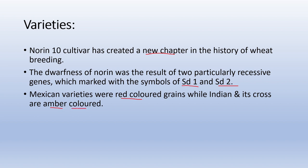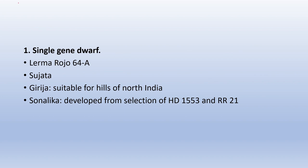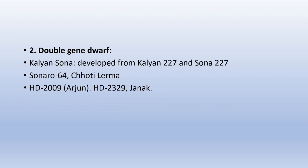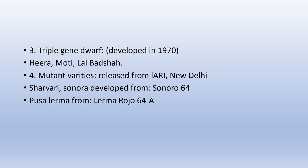First category: single gene dwarf varieties — examples are Lerma Rojo 64A, Sujata, Girija (suitable for hills of North India), and Sonalika (developed from selection of HD1553 and RR21). Second: double gene dwarf varieties — Kalyansona, Sonora 64, Chhoti Lerma, HD2009, HD2329, and Janak. Third: triple gene dwarf varieties, developed in 1970 — Heera, Moti, and Lalbatsha. Fourth: mutant varieties released from IARI New Delhi — Sharbati Sonora (from Sonora 64) and Pusa Lerma (from Lerma Rojo 64A).